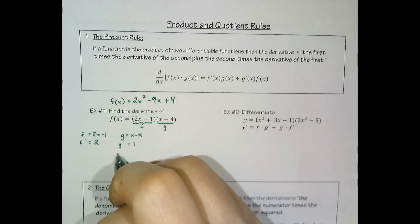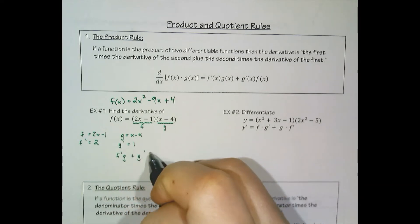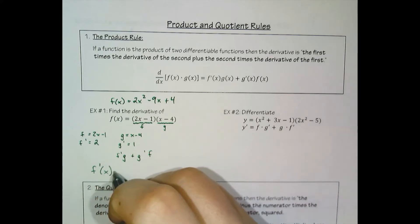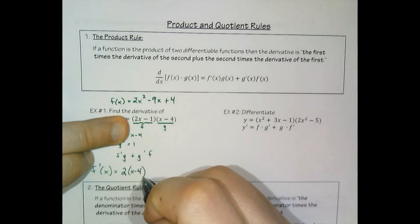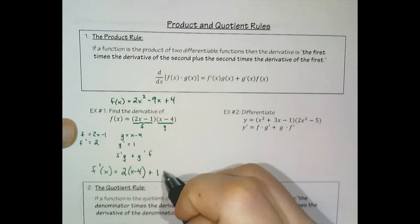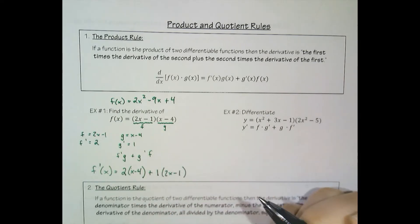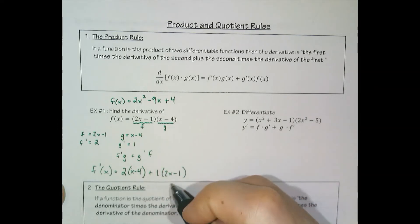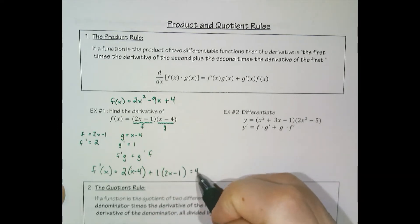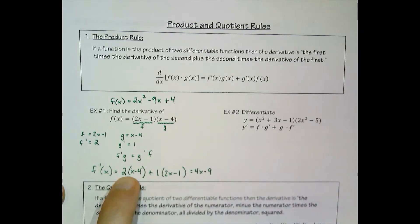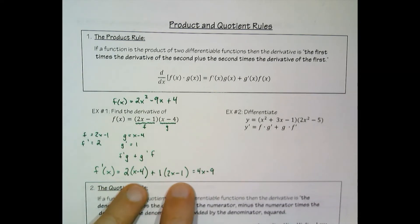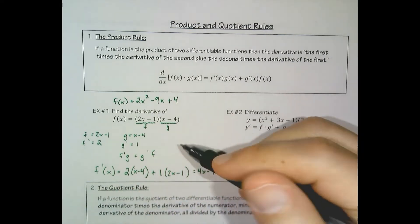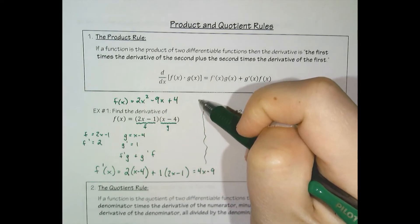When I write the derivative using this rule — f prime g plus g prime f — we're going to find that the derivative is 2 times x minus 4 plus 1 times 2x minus 1. Now if we were to clean this all up, we would find that it equals 4x minus 9. We've got 2x minus 8 plus 2x minus 1. So our 2x's become 4x and our minus 8 minus 1 becomes minus 9, and this does in fact match with the derivative of that expression.